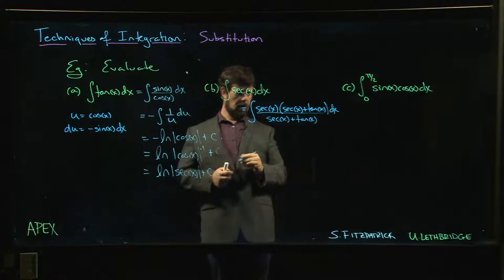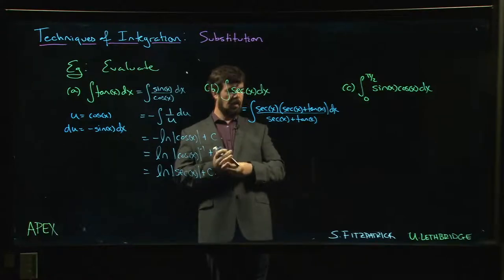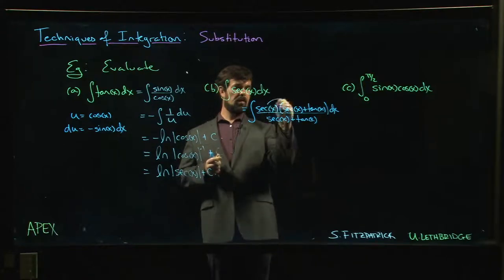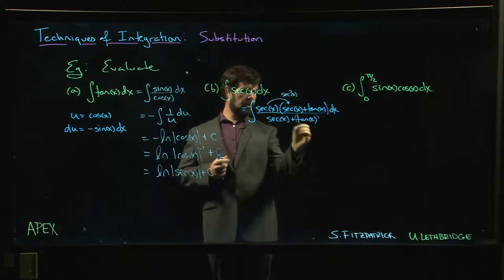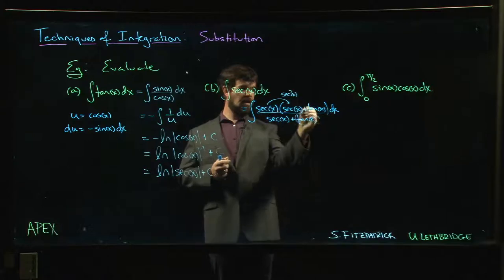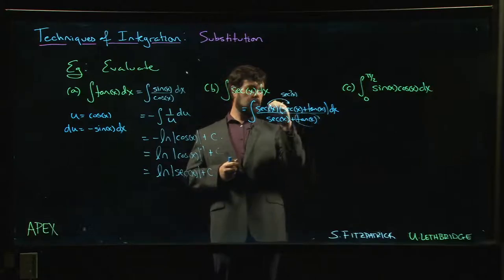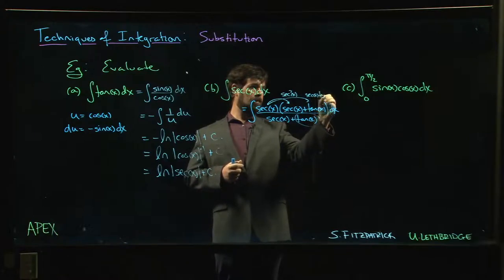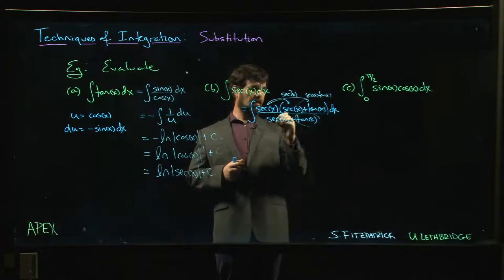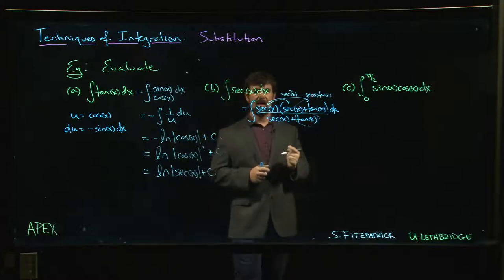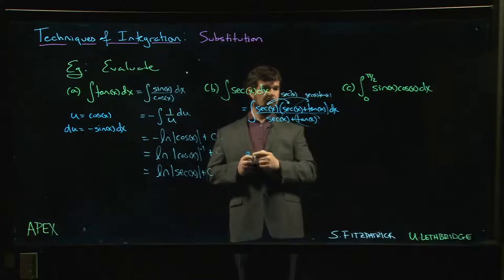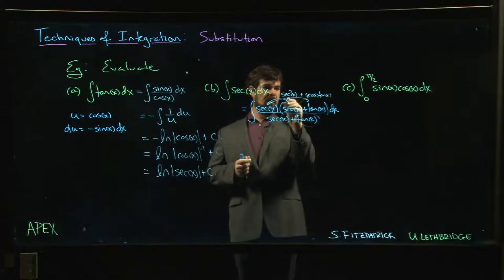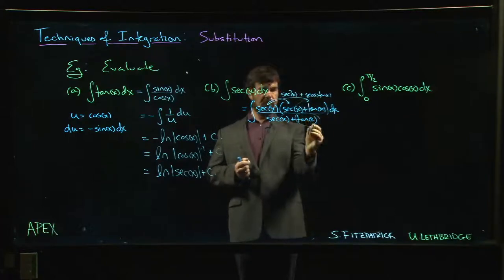How does that help me? Well, that helps because up top, if I multiply through, this gives me secant squared, which happens to be the derivative of tan. Secant times tan, well that's the derivative of secant. So I have this sum of two terms, secant squared plus secant tan, which just happens to be the derivative of what's on the bottom. That's really nice.